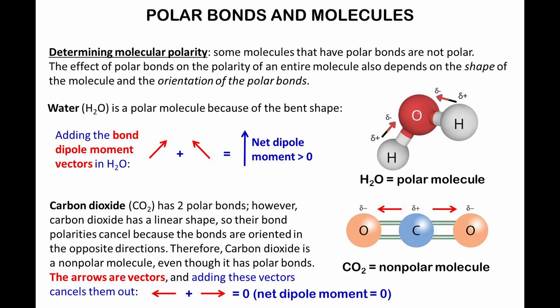Some molecules that have polar bonds are not polar. The effect of polar bonds on the polarity of an entire molecule also depends on the shape of the molecule and the orientation of the polar bonds. Water is a polar molecule because of the bent shape. Adding the bond dipole moment vectors results in a net dipole moment that is greater than 0. Carbon dioxide has two polar bonds, however, carbon dioxide has a linear shape, so their bond polarities cancel because the bonds are oriented in the opposite directions. Adding the bond dipole moment vectors results in a zero net value for the molecule. Therefore, carbon dioxide is a nonpolar molecule, even though it has polar bonds.